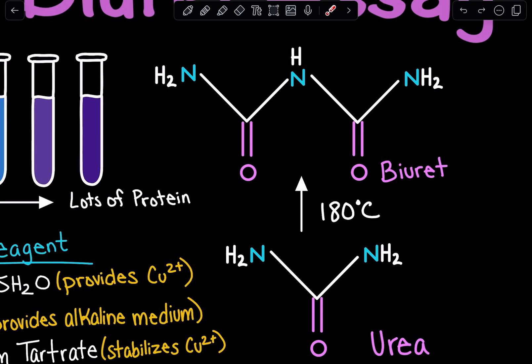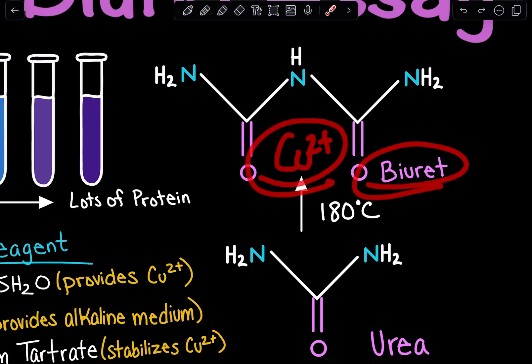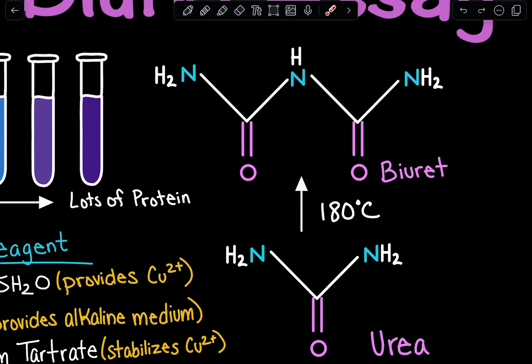When copper 2+ ions were mixed together with Biuret, the copper 2+ ions interacted with the amide bond found within Biuret. As a result, this formed a complex. When the copper 2+ interacted with that amide bond, it formed the colored coordination complex, which absorbed light at around 550 nanometers.